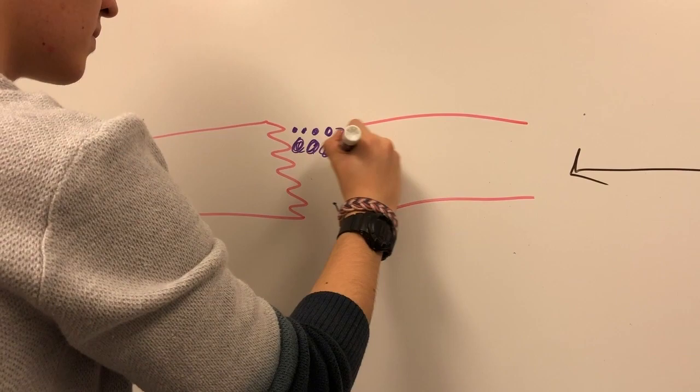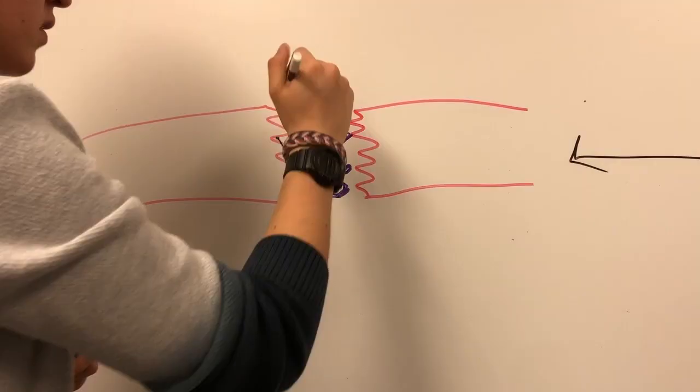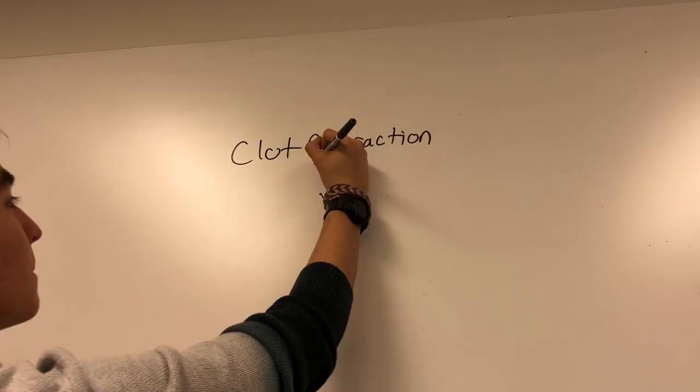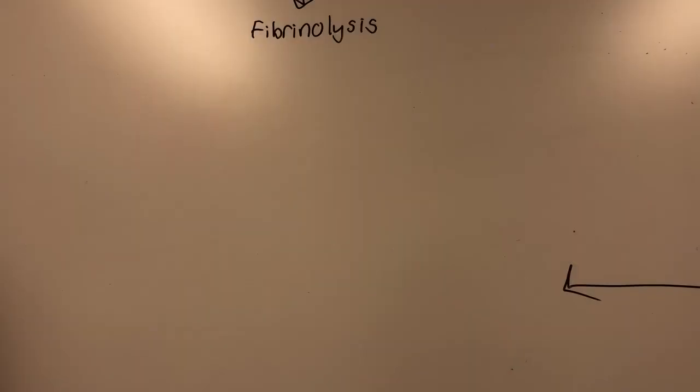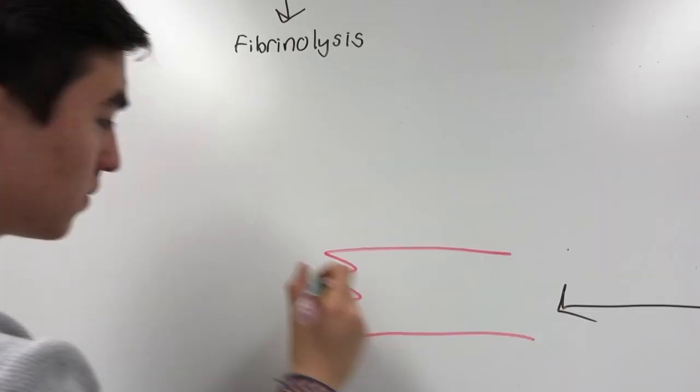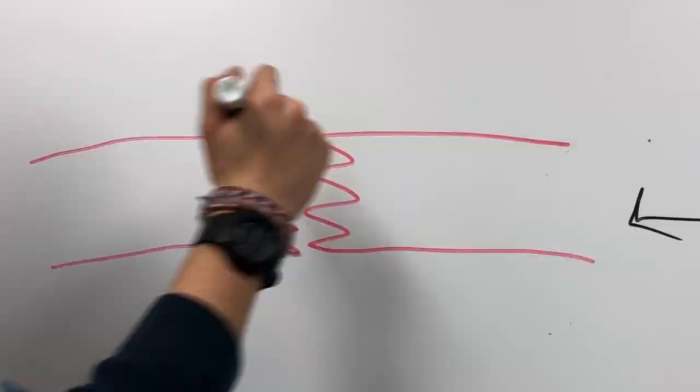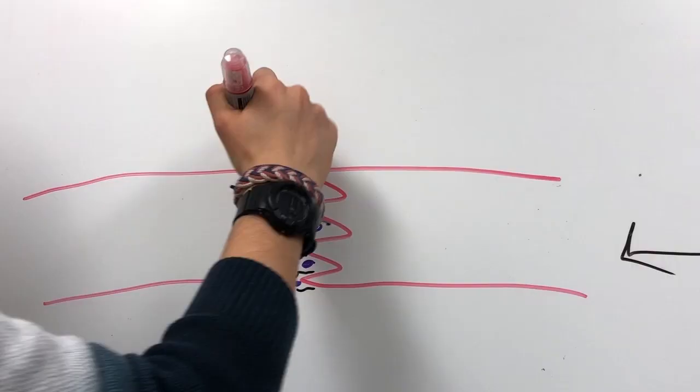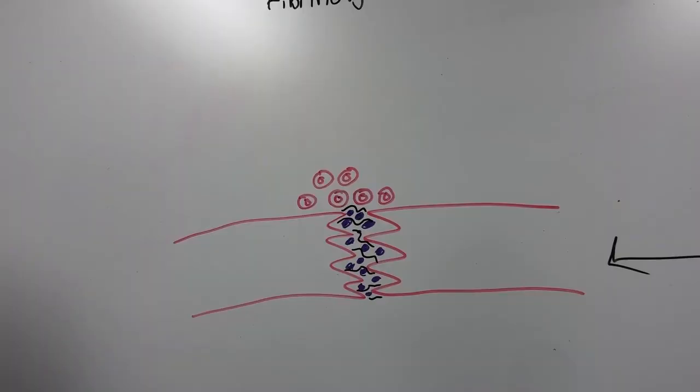Once the fibrin meshwork forms with the platelets and the blood clot is formed, red blood cells come to the injured site and attach. The entire clot then undergoes clot retraction, where the torn blood vessel edges begin to pull closer together. After clot retraction, the injured area undergoes fibrinolysis. The torn edges of the blood vessel walls have now pulled almost completely back together again, with platelets, fibrin, and red blood cells still holding it together.